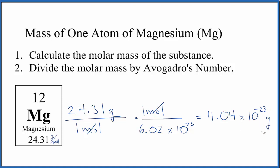If you wanted this in kilograms, you just divide this number by a thousand. That would make it even smaller: 4.04 times 10 to the negative 26th.